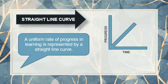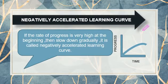The first type is the straight line curve. A uniform rate of progress in learning is represented by a straight line curve. This type is seldom found as it shows a constant rate of improvement in material learned correctly or in terms of reduction of errors per trial. The second type is the negatively accelerated or convex curve. If the rate of progress is very high at the beginning and then slows down gradually, it is called a negatively accelerated learning curve.